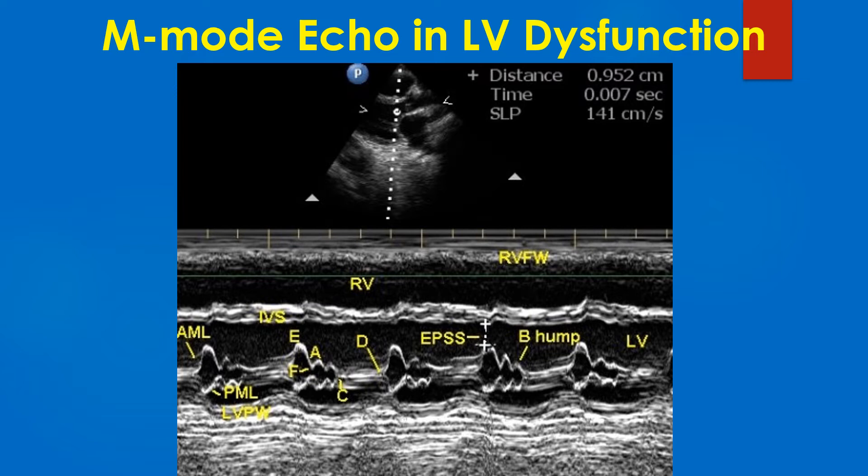The horizontal axis represents time. M mode was also called TM or time motion mode and later abbreviated to M mode. Downward excursion indicates the systolic contraction of the RV free wall. The echo-free space below that represents the right ventricle, usually near the outflow region.